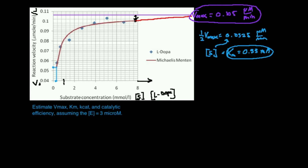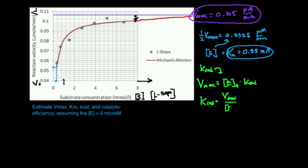The Km, the Michaelis constant, is really more of an equilibrium constant, which is why the K is capital. Now I'm going to move to calculating the Kcat. The Kcat is a rate constant, so it uses a lowercase k. To find the Kcat, there's an equation: the Vmax of an enzyme equals the total enzyme concentration times the Kcat. So if I want to find the rate constant, I divide both sides by the enzyme concentration — the Kcat equals Vmax divided by total enzyme concentration.